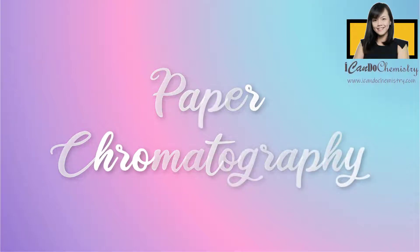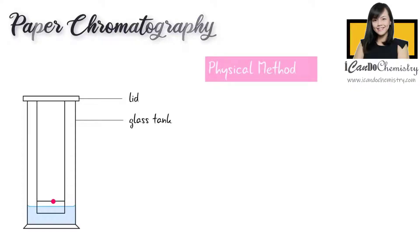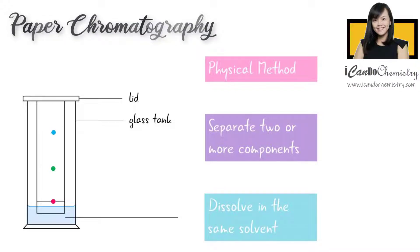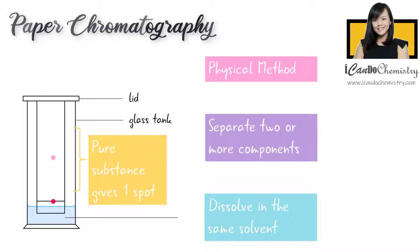In this video, we will focus on paper chromatography. Chromatography is a physical method used to separate two or more components that dissolve in the same solvent. We can use chromatography to separate and identify components in a sample. We can also use chromatography to determine the purity of a substance.